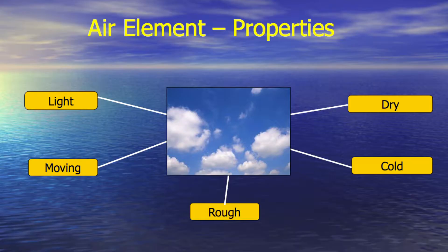Air is another element. We only notice air when we see leaves and things moving — it's not visible, but it's noticed by movement. Wind is the example of this. Because air is moving, things that move have to be lighter. The heavier they are, the less they move. So the air element has the quality of being light and moving.